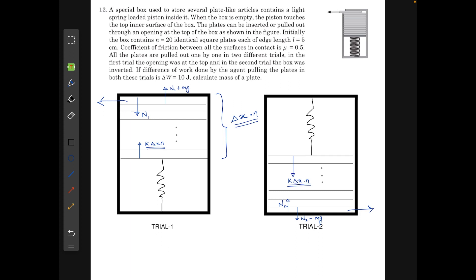So you can look at it once before looking at the solution. So let's begin. In this problem we have been said that a special box is used to store several plate-like articles containing a light spring-loaded piston inside it. When the box is empty the piston touches the top inner surface of the box. The plates can be inserted or pulled out through an opening at the top of the box as shown in the figure.